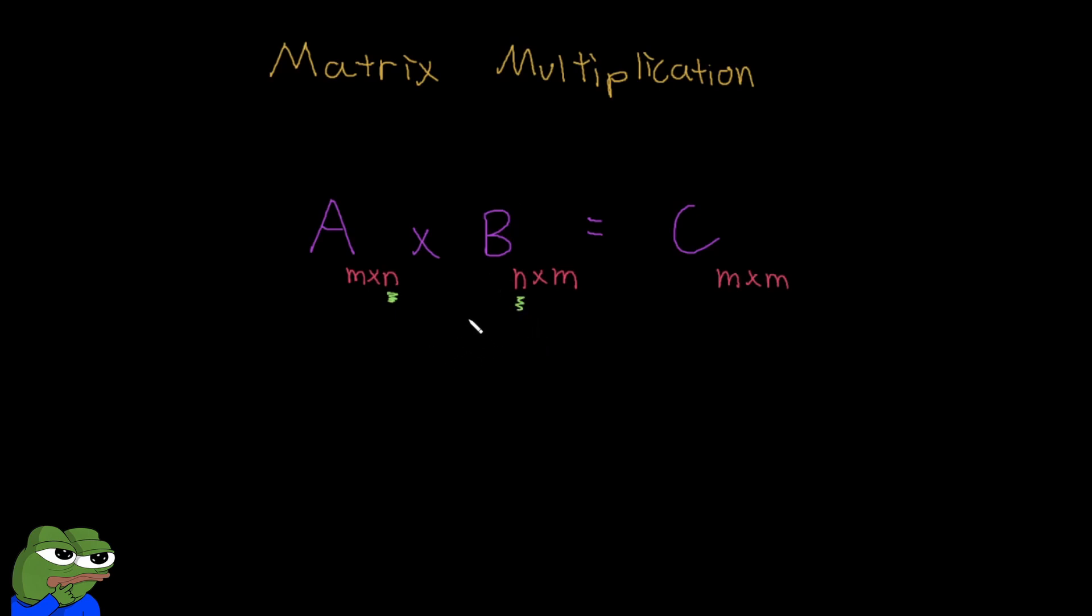Once that condition is filled, you know that those two matrices can be multiplied. And if they are, they yield another matrix with dimensions of the rows of the first matrix by the columns of the second matrix. That's why our resultant matrix here, C, is M by M.